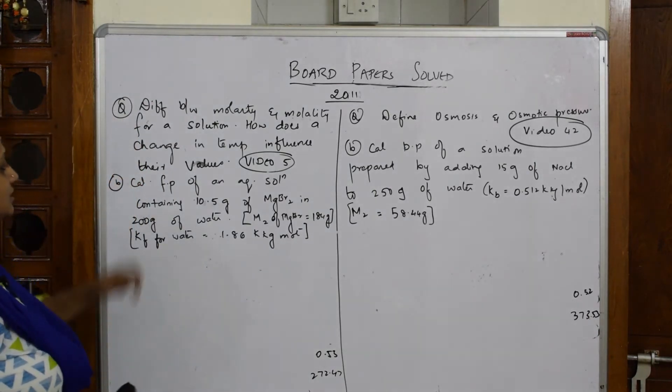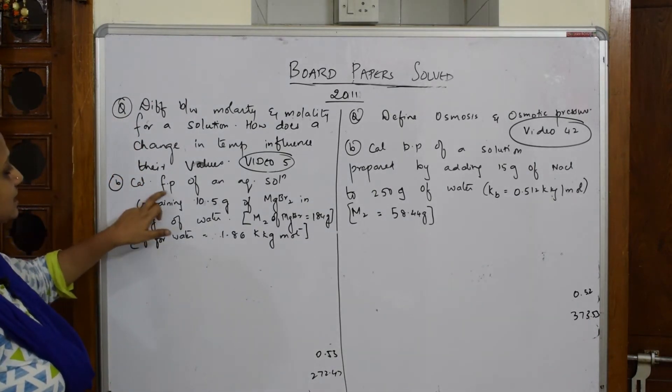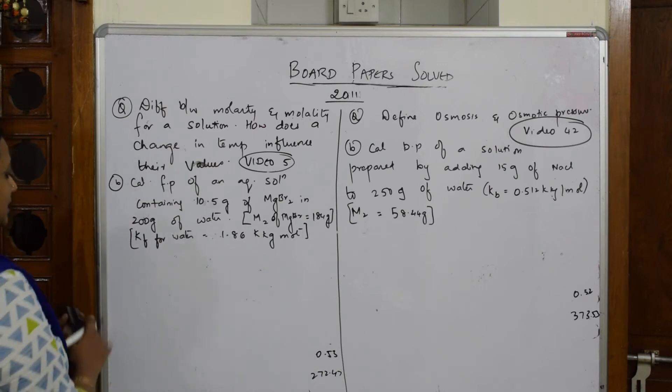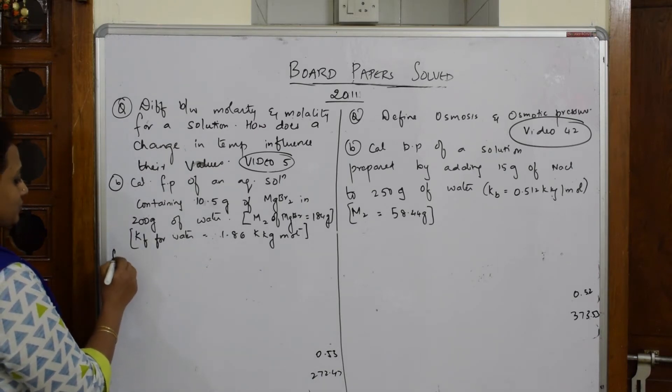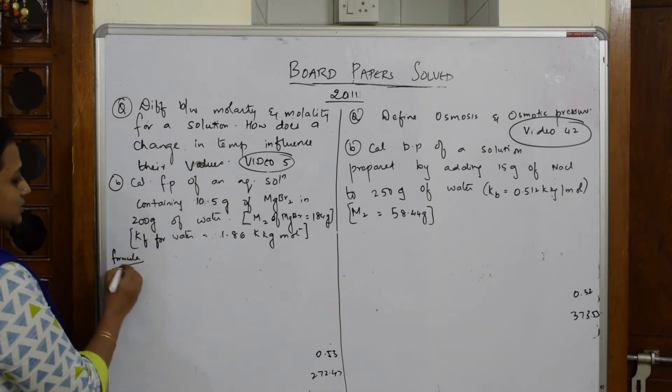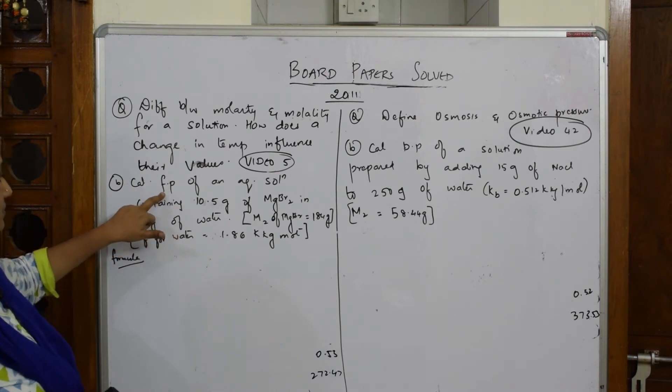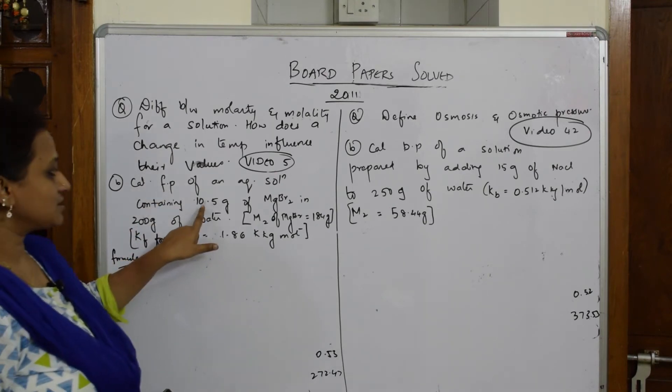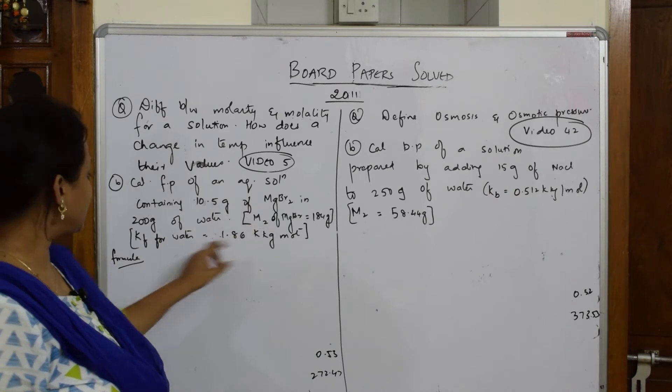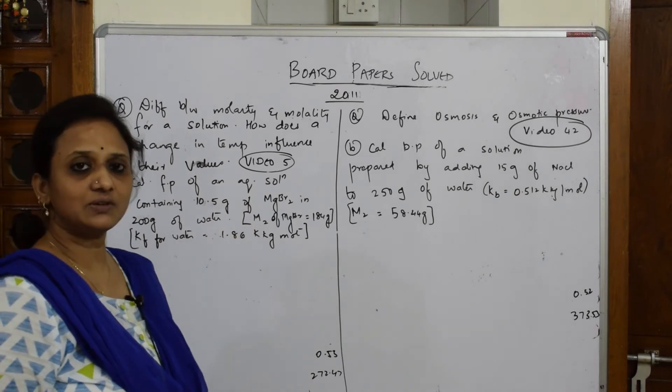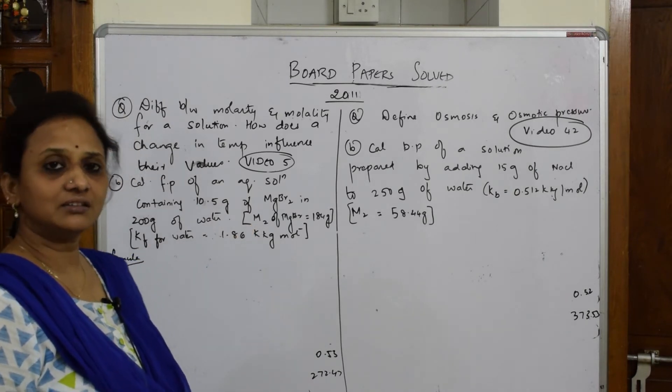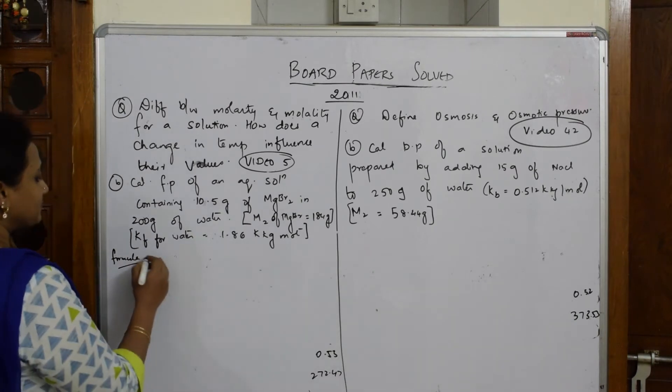Let us come back to the numerical. Here we calculate freezing point (FP). Let me write the formula first. What is given: mass weight, molar mass, and Kf. The formula for cryoscopic constant is delta TF equals Kf into molality.